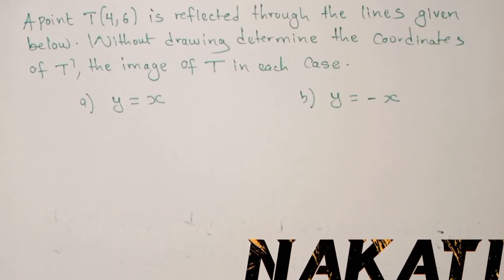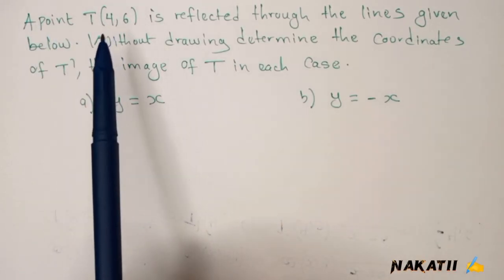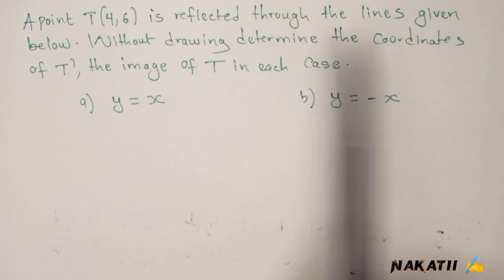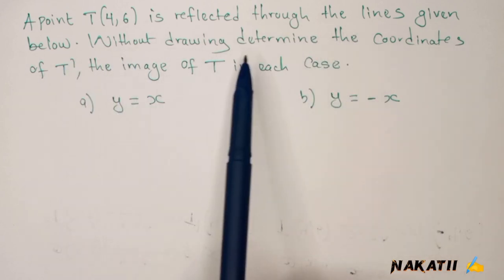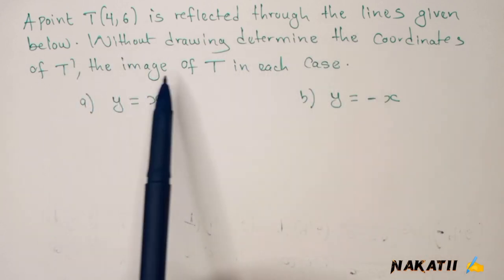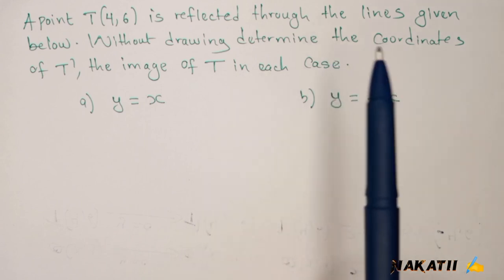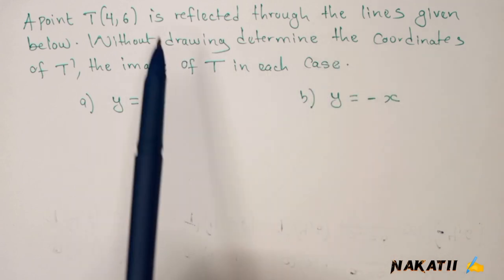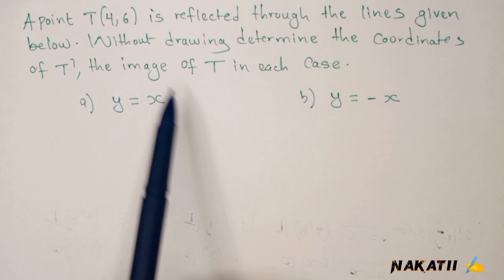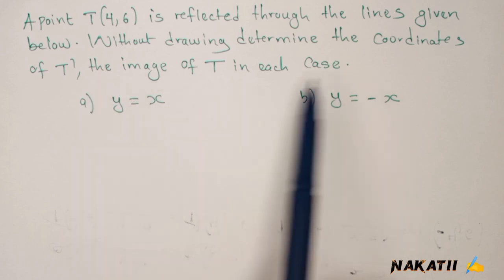A point T(4,6) is reflected through the lines given below. Without drawing, determine the coordinates of T', the image of T in each case. I'm supposed to reflect point T(4,6) on this line and also on this line.